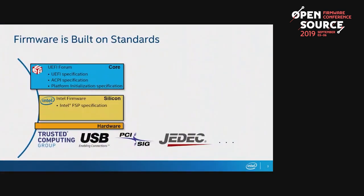I want to show how we develop code today and why we're able to share core and silicon code but platform is a problem. If you look at the core code, our specifications are maintained by the UEFI Forum. We have two main specifications: the UEFI spec and the ACPI specification. The UEFI spec describes the interface between the operating system and the firmware, and ACPI describes an interpreted runtime language that can offer basic hardware abstraction. The platform initialization spec is generally what makes our EDK2 firmware EDK2 — it defines how to construct firmware.